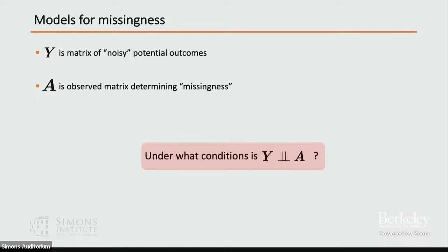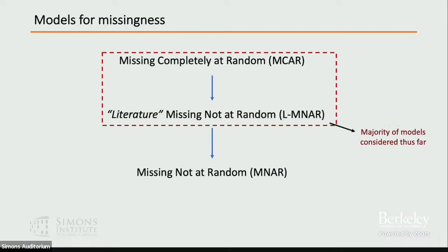There are a variety of models of missingness, borrowing from Don Rubin. The first is missing completely at random, MCAR. The second — which I'll call literature missing not at random, or LMNAR — covers the majority of models considered in the matrix completion literature so far. There's also missing at random, which sits between these two. And the most general model is MNAR — missing not at random.